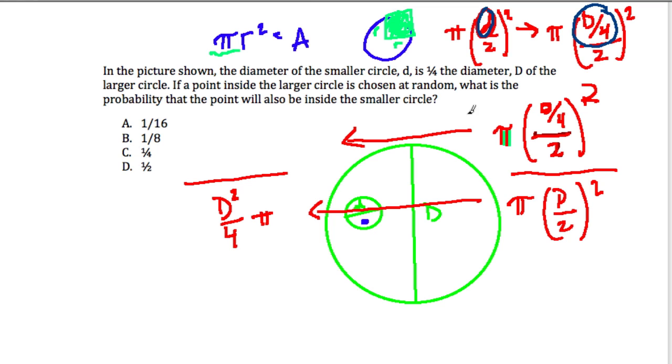And in the numerator, we have D over 4 over 2, multiply numerator and denominator by 1 half, we get big D over 8 squared times pi. Before I go any further, I'm going to cancel out the pi's.